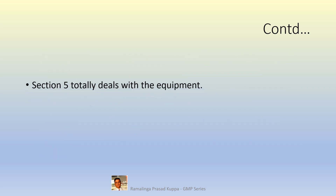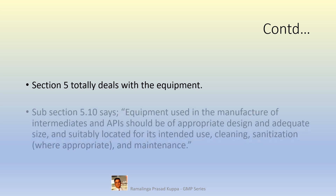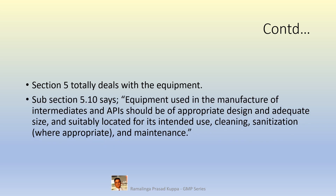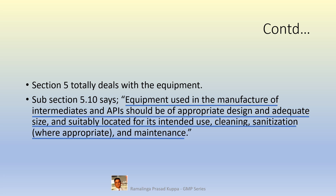Section 5 totally deals with equipment. After addressing the requirements for facilities, the focus is now on equipment. Subsection 5.10 says equipment used in the manufacture of intermediates and APIs should be of appropriate design and adequate size, and suitably located for its intended use, cleaning, sanitization where appropriate, and maintenance.